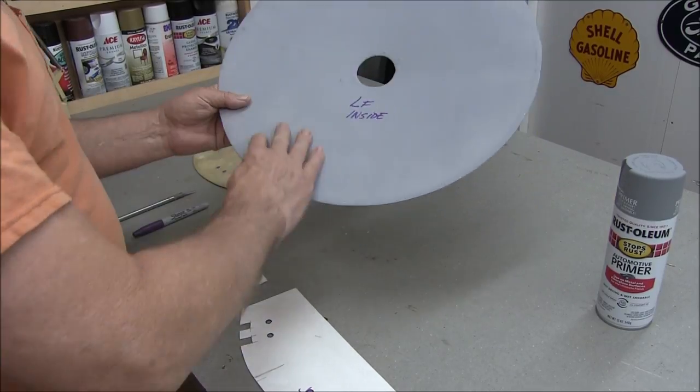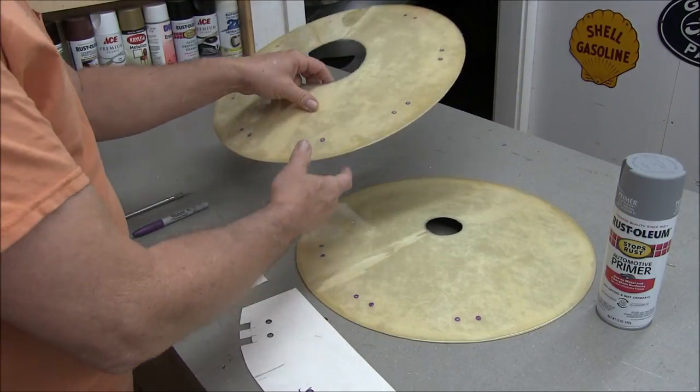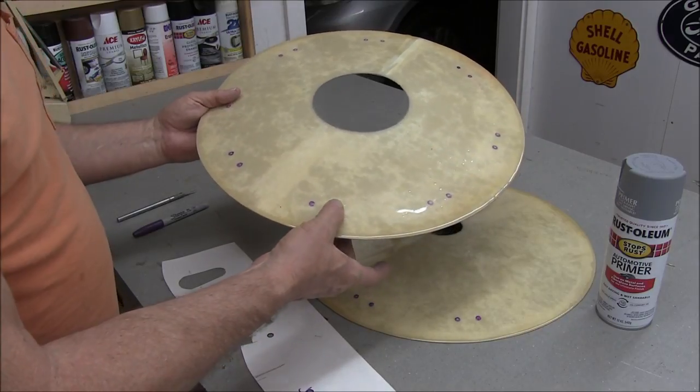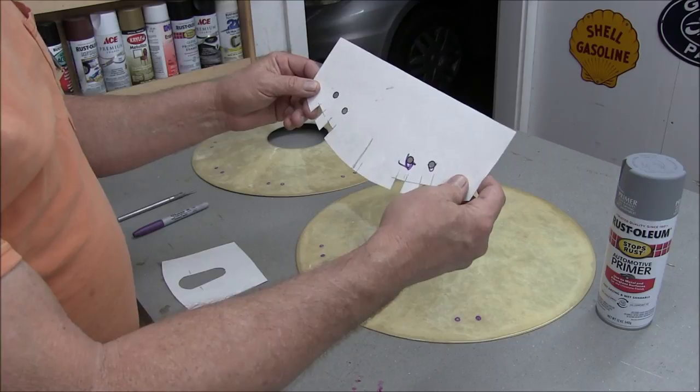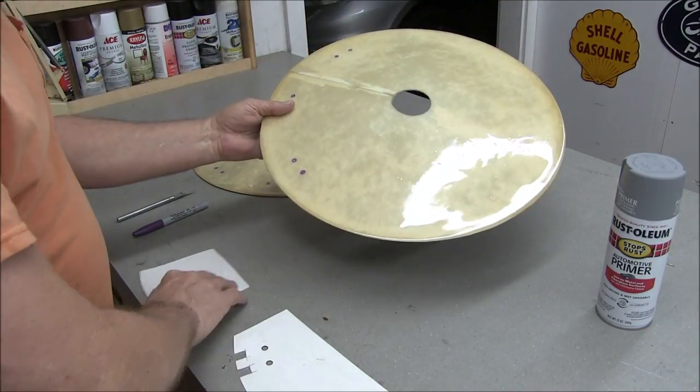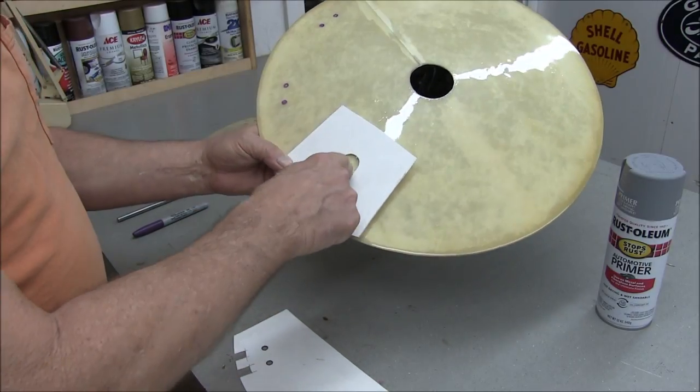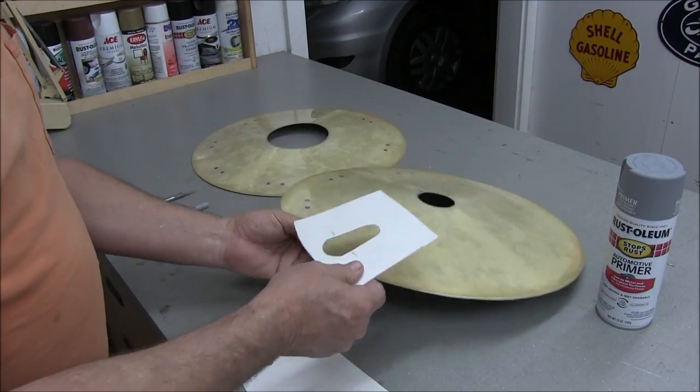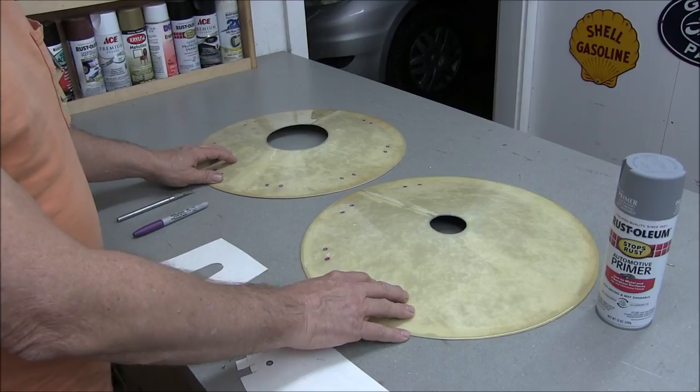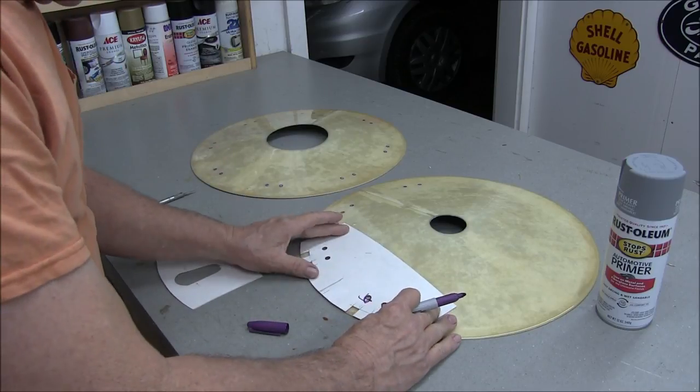I finished spraying the primer on the inside of all eight discs. And now I'm laying out the location of where I'll drill the holes for the zip ties that'll hold the two together. I made this little pattern and I just worked my way around. Now on the inside discs I need to cut out a spot for the air valve. So I'll use this to mark a location and cut it out. I wanted to do all this drilling and cutting before I did the final sanding and primer work.